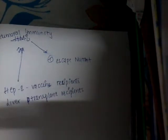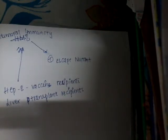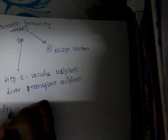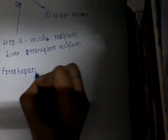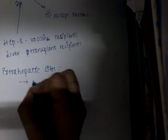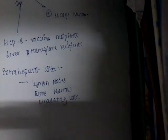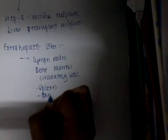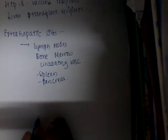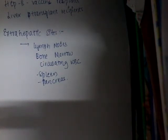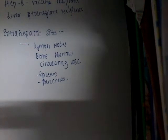Hepatitis B virus is not just seen in the liver; it is also found in extra-hepatic sites such as lymph nodes, bone marrow, circulating lymphocytes (WBCs), spleen, and pancreas. In our next class we will learn about hepatitis D virus and hepatitis C virus.